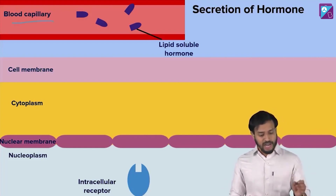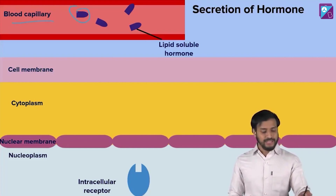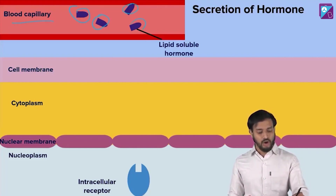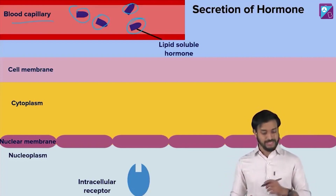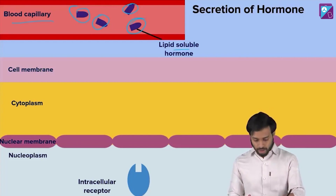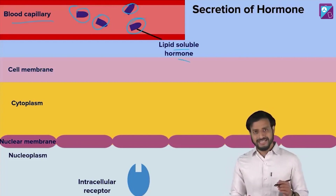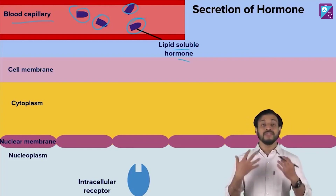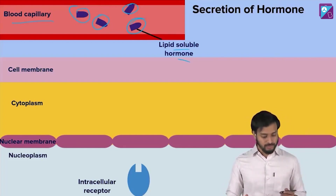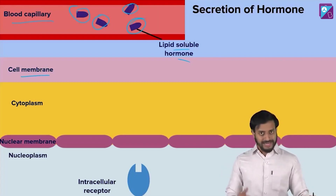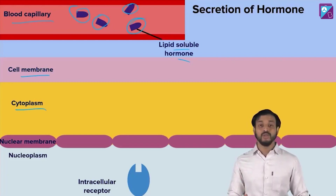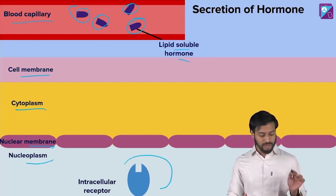These that you are seeing are the lipid soluble hormones traveling through the blood, through the blood vessels to be specific. They have target sites they have to reach, and the blood helps them travel. You have the cell membrane, then moving inside you have the cytoplasm, then the nuclear membrane, and next is the nucleoplasm. You have the intracellular receptors here.